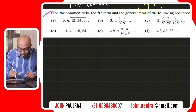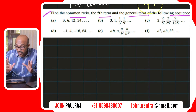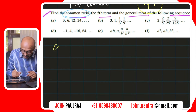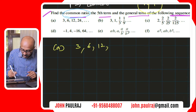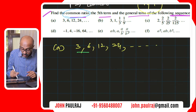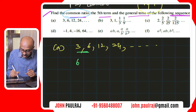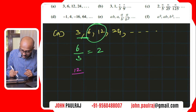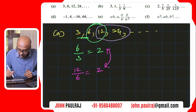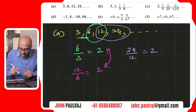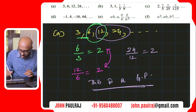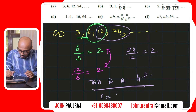Let's illustrate this formula using examples. The question says: find the common ratio, the fifth term, and the general term of the following sequences. The first sequence is 3, 6, 12, 24, and so on. We check the ratio of consecutive terms: 6 divided by 3 is 2; 12 divided by 6 is again 2; 24 divided by 12 is also 2. There is a common ratio, so this is a GP with common ratio r equal to 2.